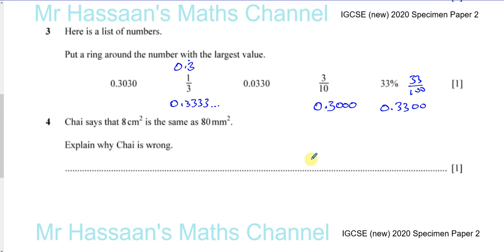So when you compare them, okay, what you could do is write them down right on top of each other to make it clear. So you have 0.3030, and you have 0.3333,